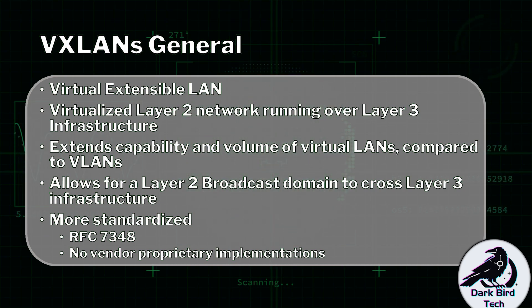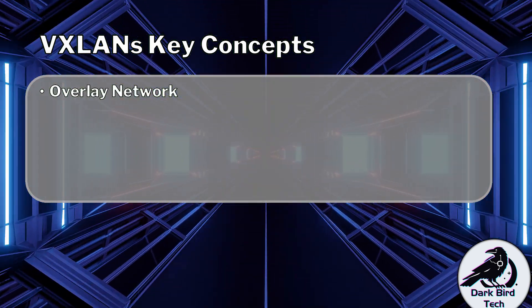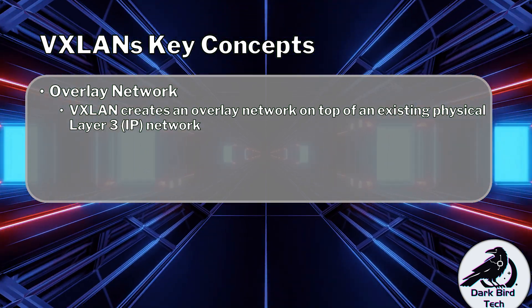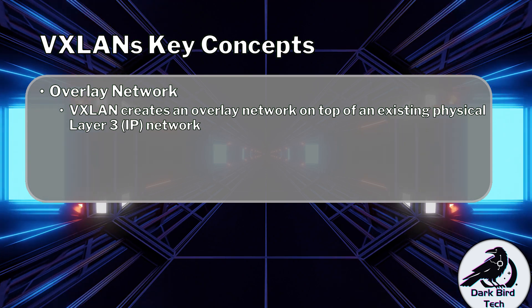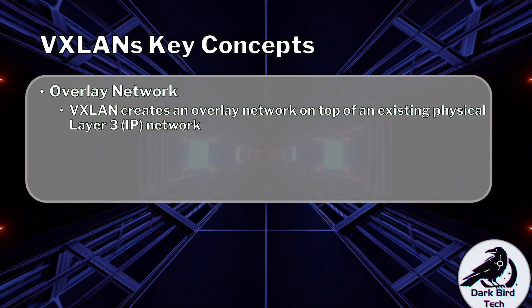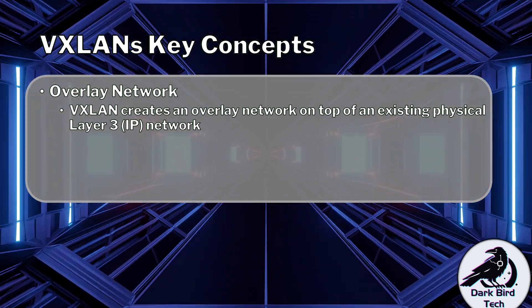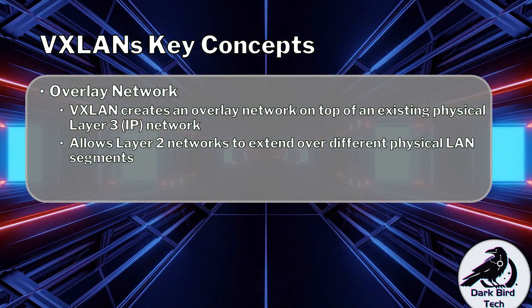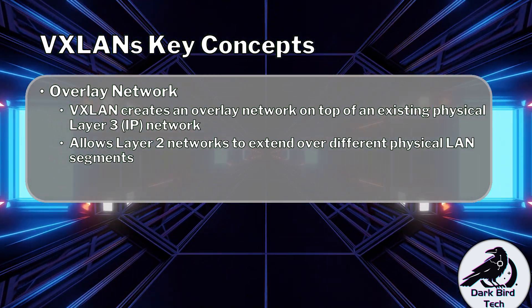With that general concept in mind, let's go through some key concepts. First of all, VXLANs are considered an overlay network. This means that VXLANs create an overlay infrastructure for layer two communications on top of a layer three IP network. This is very similar in effect to what a VPN does — overlaying network infrastructure on top of an actual infrastructure to add a new path. But in the case of VXLANs, it's more about managing and controlling data than protecting it. This will allow the layer two infrastructure to actually extend across physical LAN segments, because the overlay is able to trick the endpoints into thinking they're both in the same LAN segment.